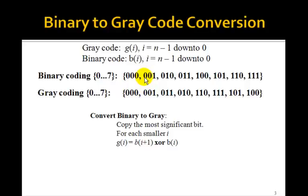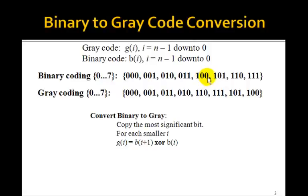Here you copy the first bit. 0 XOR 0 is 0. 0 XOR 1 is 1. Copy the most significant bit. 0 XOR 1 is 1. 1 XOR 0 is 1. Copy the first bit. 0 XOR 1 is 1. 1 XOR 1 is 0. Copy the most significant one. 1 XOR 0 is 1. 0 XOR 0 is 0. Copy the 1. 1 XOR 0 is 1. 0 XOR 1 is 1. Copy the most significant one. 1 XOR 1 is 0. 1 XOR 0 is 1. Copy the most significant. 1 XOR 1 is 0. 1 XOR 1 is 0. So that's how it works.